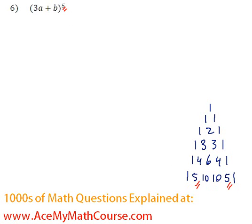So now I'm just going to write down all these elements. 1 times 3a to the 5, b to the 0, plus 5.